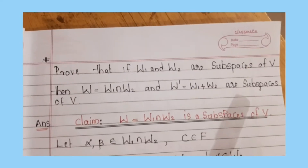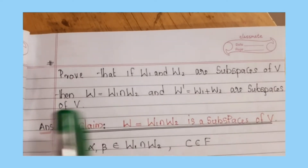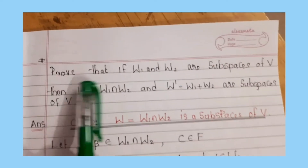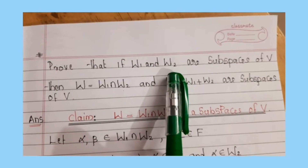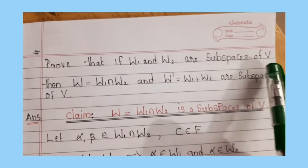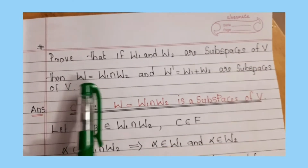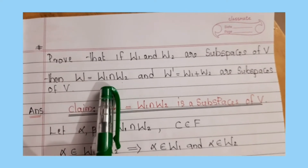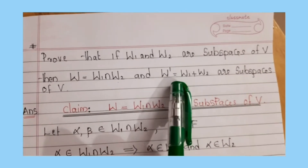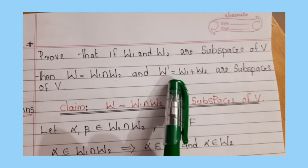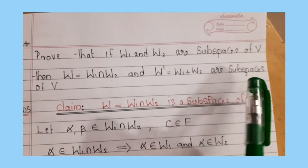Next, we have to discuss a problem. Prove that if W1 and W2 are subspaces of V, then W = W1 intersection W2 and W' = W1 + W2 are also subspaces of V.